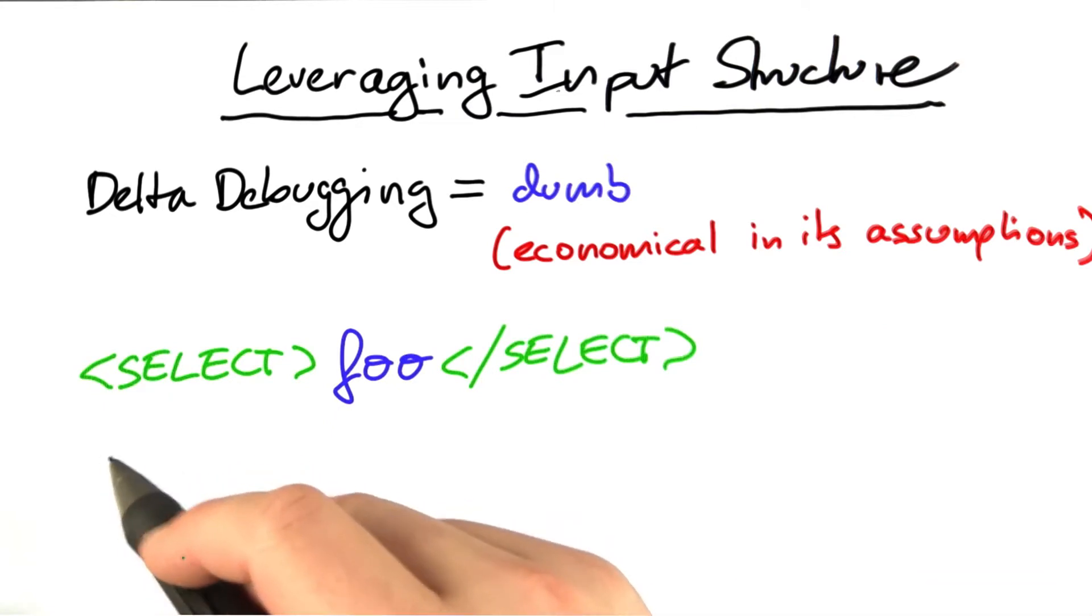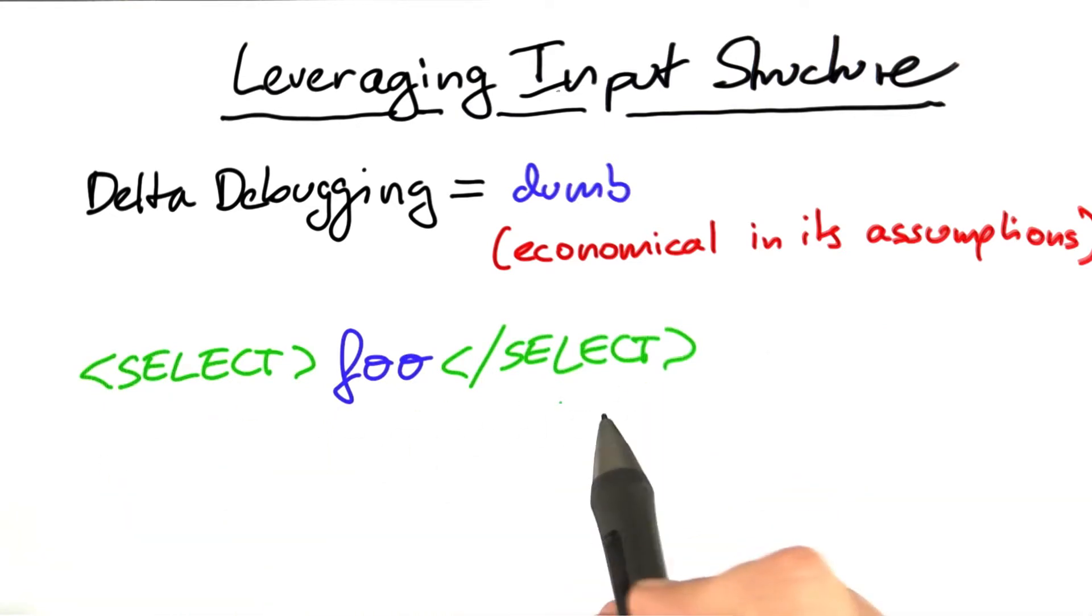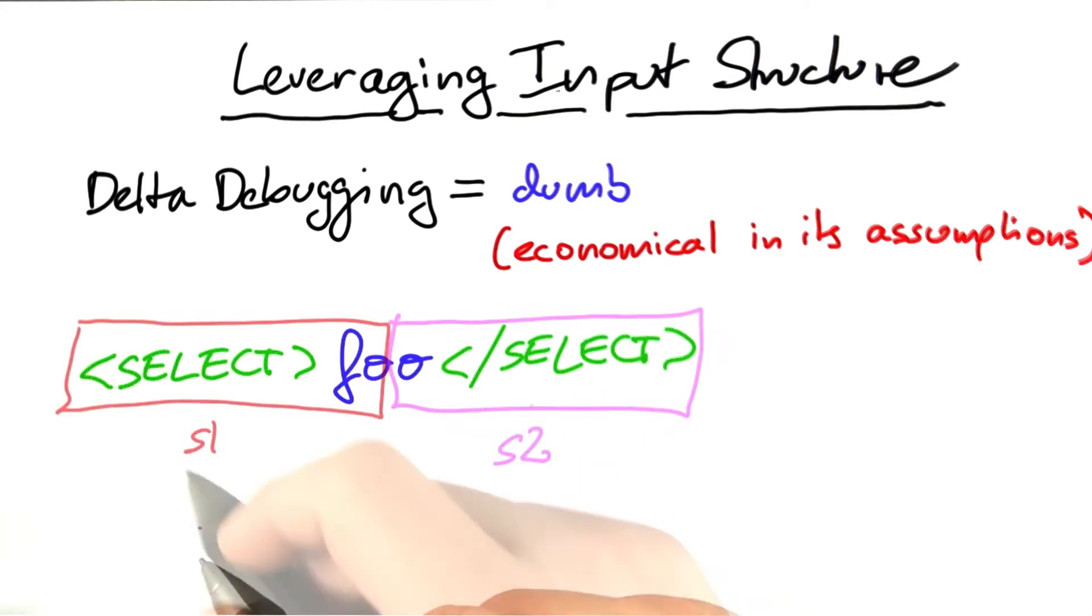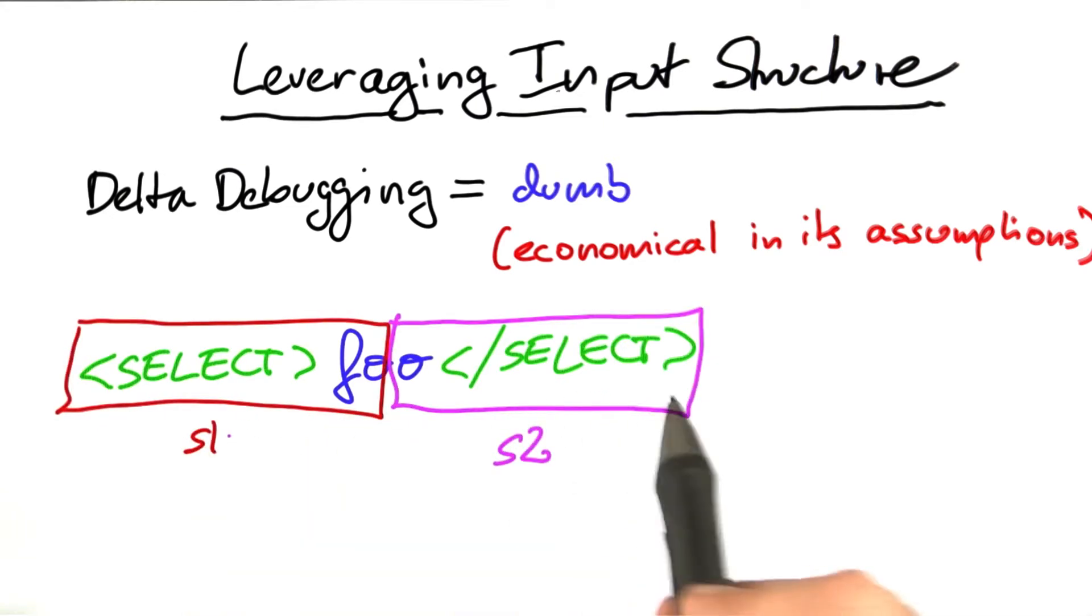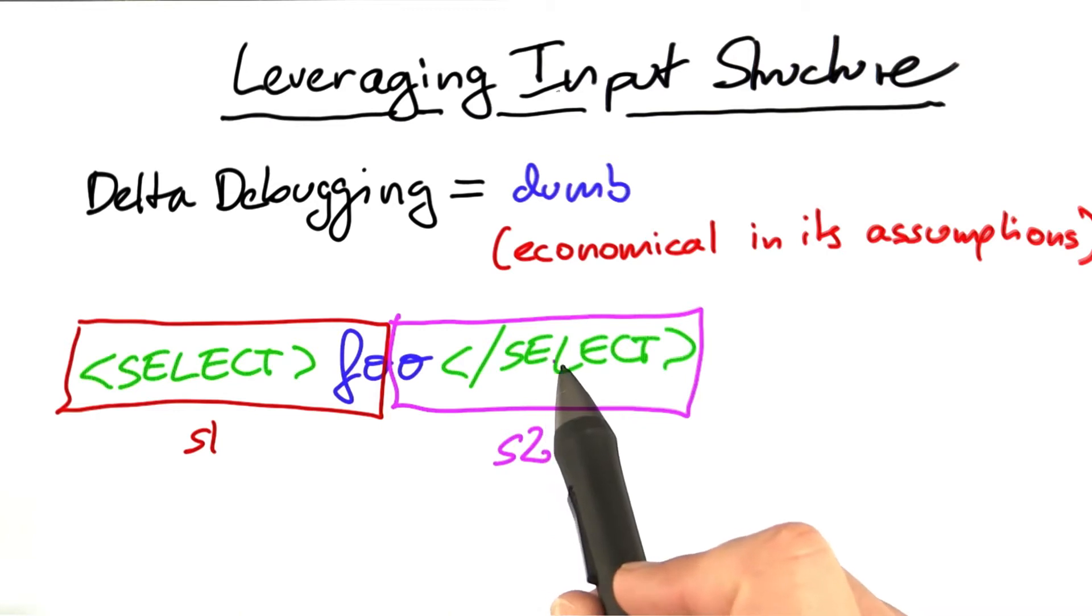When faced with this 20 character input, delta debugging will have to split this into two halves in the beginning. But since delta debugging doesn't know about the structure, the division will be right in the middle of the input.